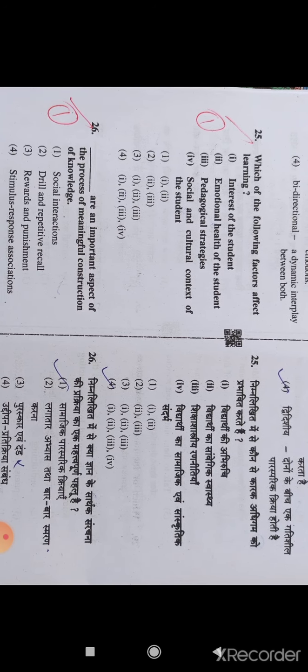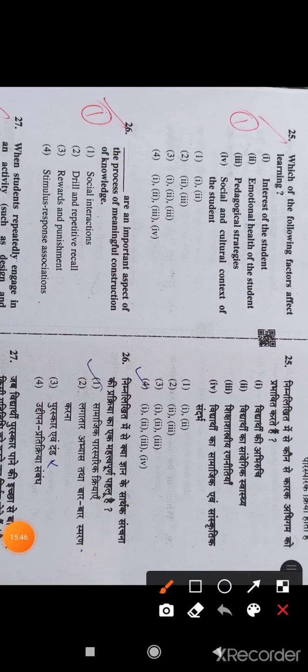Question number 25: Which of the following factors affect learning? Option 4, all of them: interest of the student, emotional health of the student, pedagogical strategies, and social and cultural context of the student. All these factors affect learning.